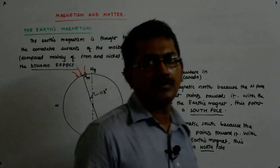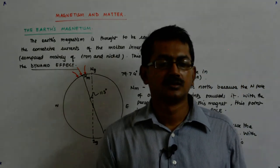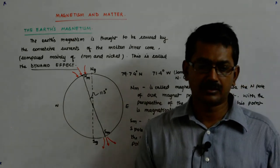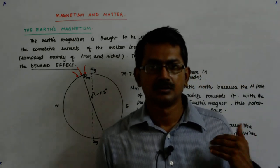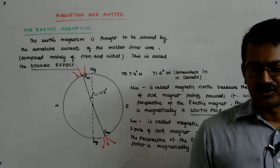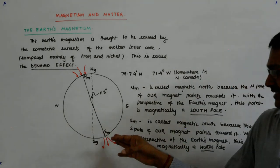It is NM because it is the north seeking pole. Where my north seeks this pole. And this is SM because my south seeks that.